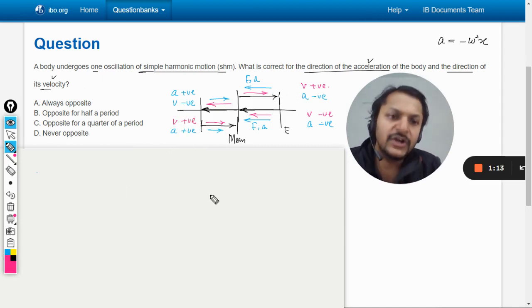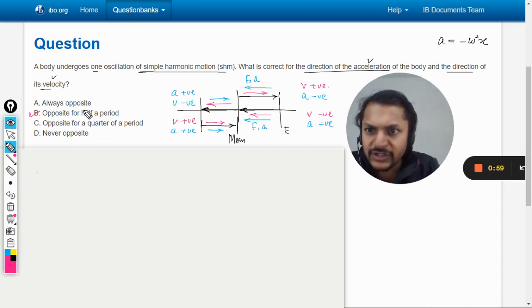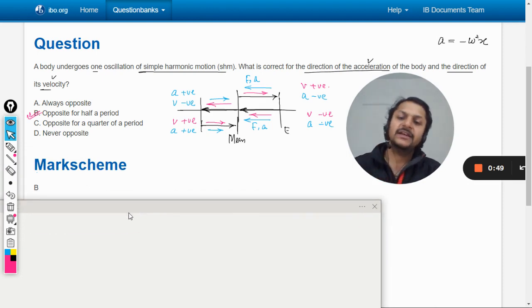So, my dear students, you can see that for half of the time they are acting opposite to each other and for half of the time they are in the same direction. So opposite for half of period? Opposite for quarter of period? No. Never opposite? Always opposite? So, my dear students, the answer will be B, and this is the explanation for it. Let us verify our answer from the mark scheme. Well, yes, the answer is B.